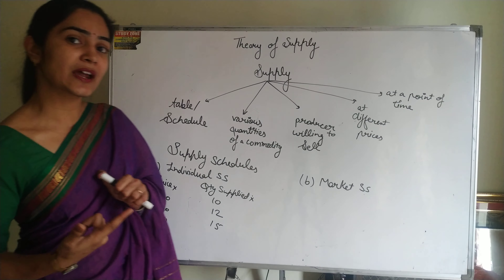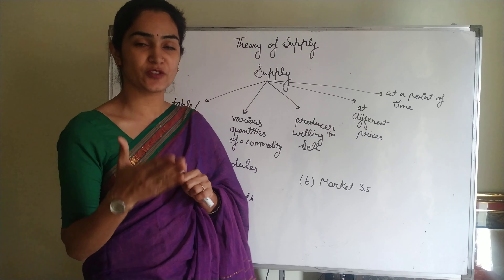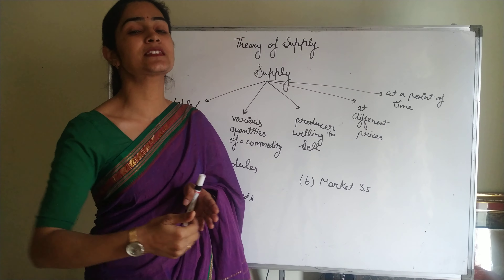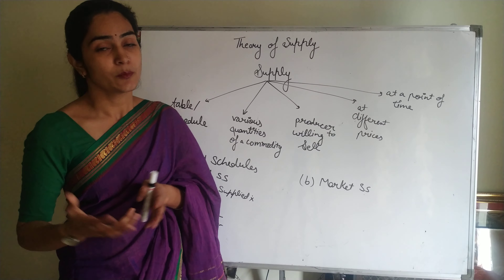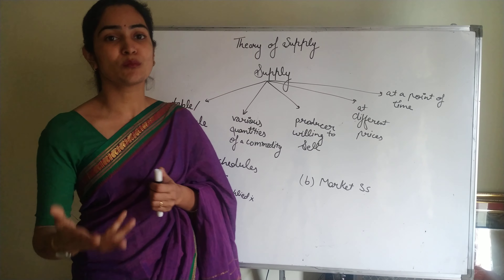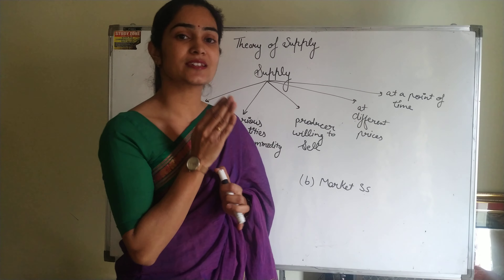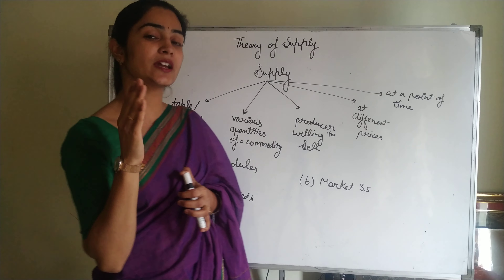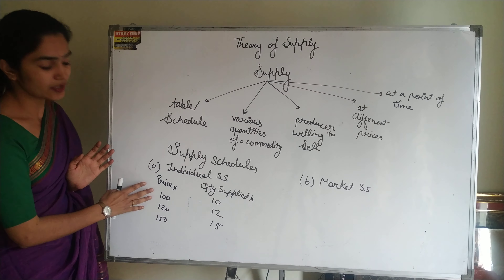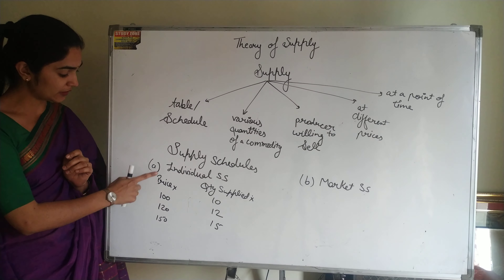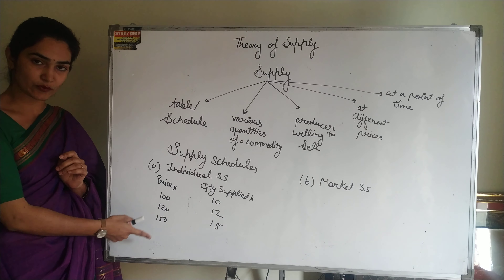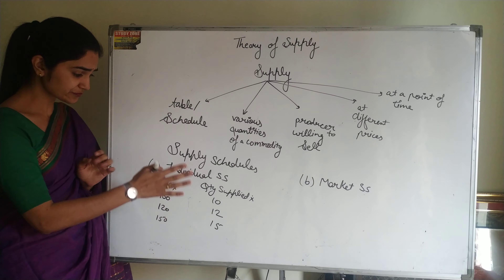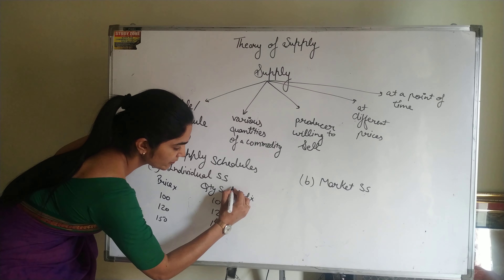The basic determinant of supply is price. While studying the individual or market supply schedule, we show the relationship between price and supply. This relationship is positive: if the price is increasing, the producer gets more profit, so the supply will increase. If the price is decreasing, the supply will decrease. Here we see: as price goes from 100 to 120 to 150, the quantity supplied also increases from 10 to 12 to 15. This is for firm A.